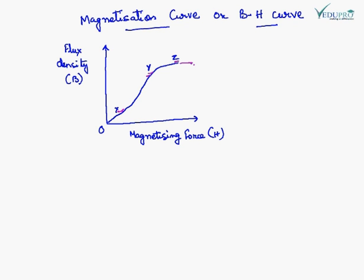So this region is known as saturation region of the material. This means that if we change excitation current I, H changes but no change is there in B.